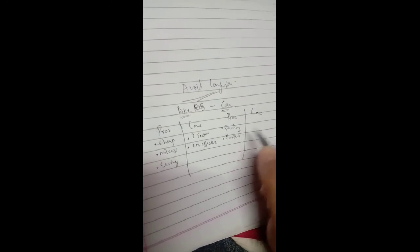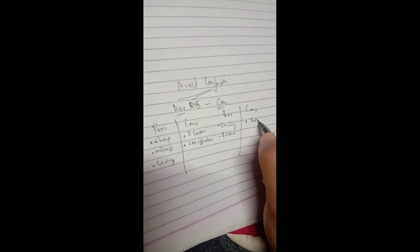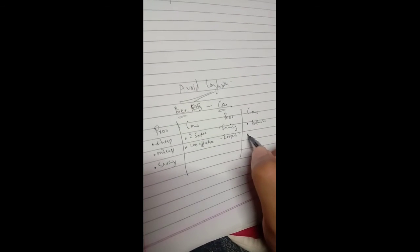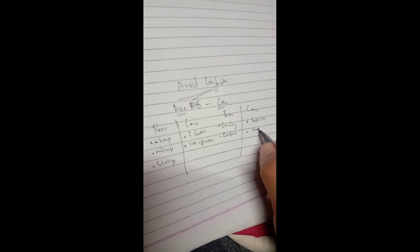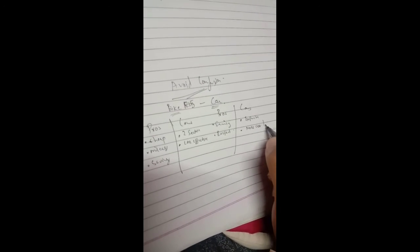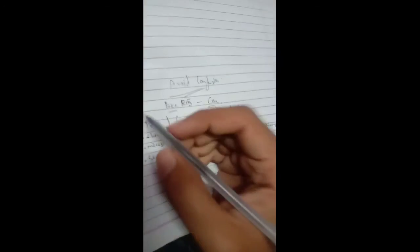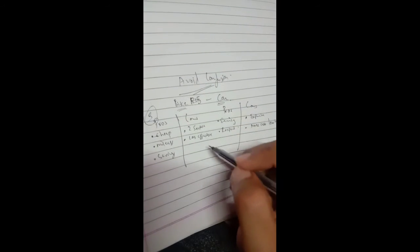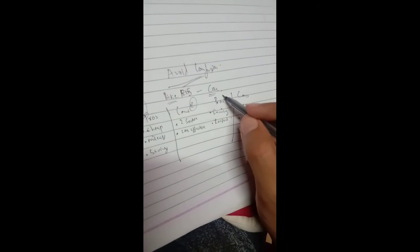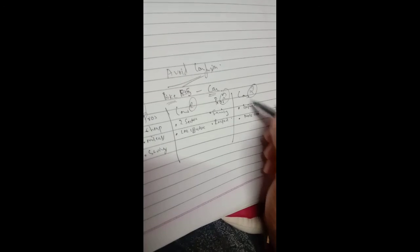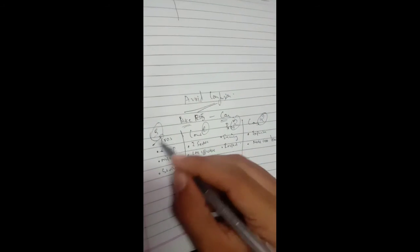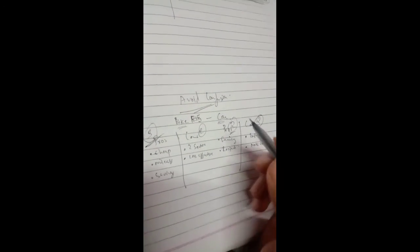from society. But cons is it is expensive, less mileage, more cost, and everything. So in this you see that there are three pros of this and two cons, and two pros and two cons. So now you can match that. Okay, three pros and two pros means this one